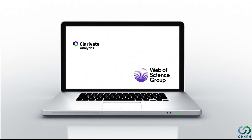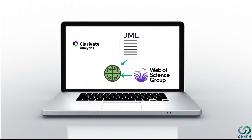Clarivate Analytics is a private firm that keeps records of research journals, known as the Journal Master List. This journal list is available on the website of Web of Sciences. The Journal Master List of Clarivate Index has research journals from all fields of sciences, with millions of records that are updated annually. Not every research journal can make it to the Journal Master List maintained by Clarivate — there is a strict criteria that a journal has to meet before being included.